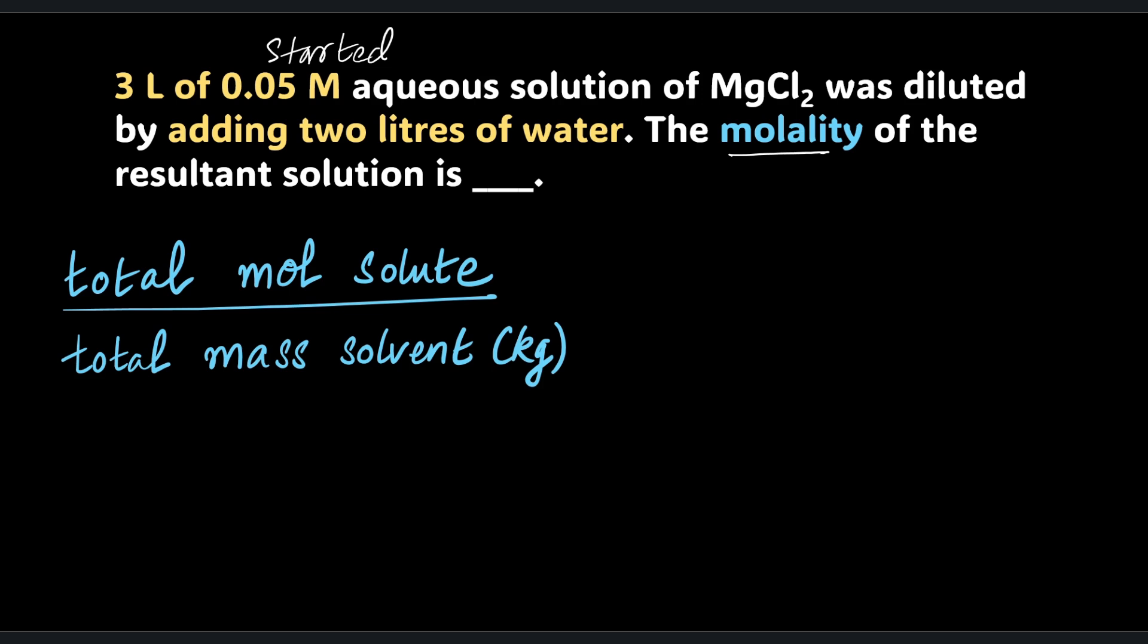I have molarity with the R right here as 0.05 and I have volume. How do I get total moles of solute from this? The final volume of the solution becomes 3 plus 2, right? You've got 3 to start off with and you've got two more, so...